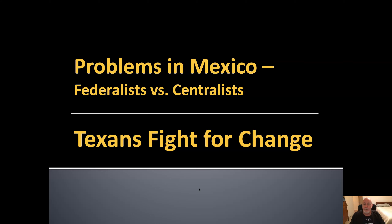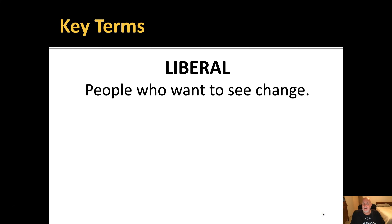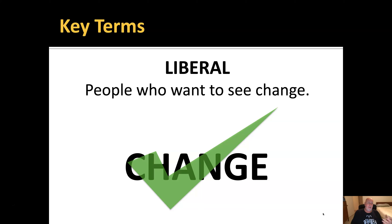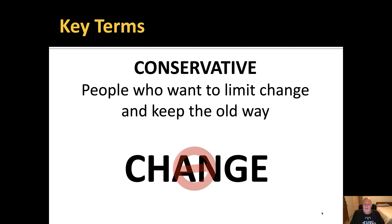The first key term is 'liberal.' No doubt you've heard this term before. A liberal is a person who wants to see change — they want changes in the government, maybe from one form of government to another. The flip side of a liberal is a 'conservative.' A conservative is a person who wants to limit change and keep things the old way, to maintain the status quo — to maintain the way things are going.